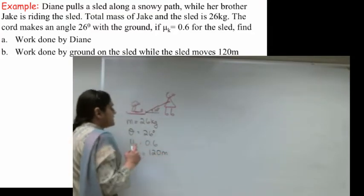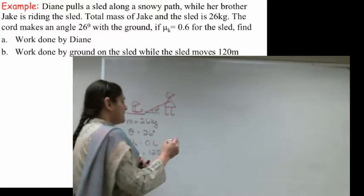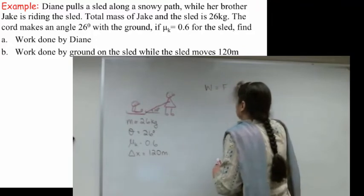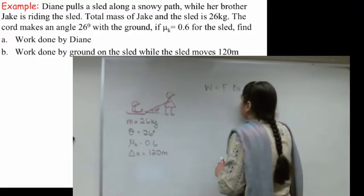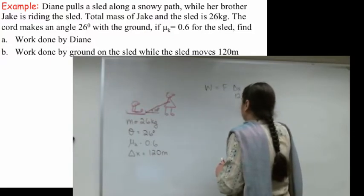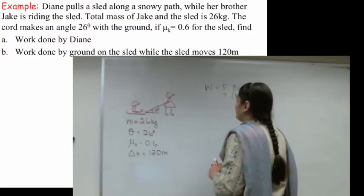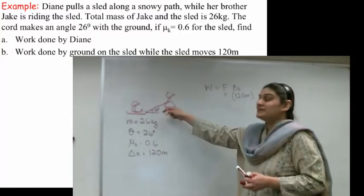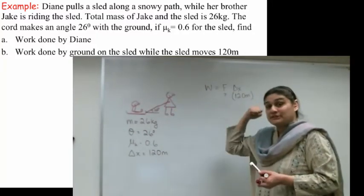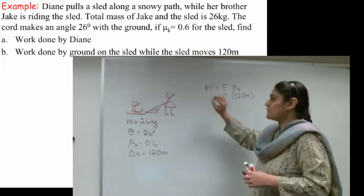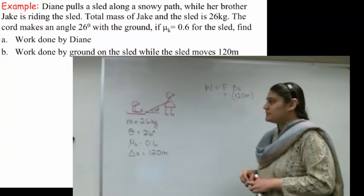So the work done is always going to be equal to force times the displacement. The displacement is 120 meters. That we know. Now, what is the force? What is the thing that's supplying the force? Well, it's the tension in the cord. She's pulling it, so it's actually the tension. So we need to be able to find the tension for this problem. And how do we do that?